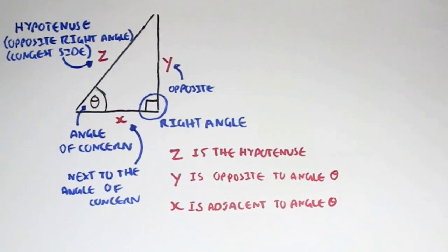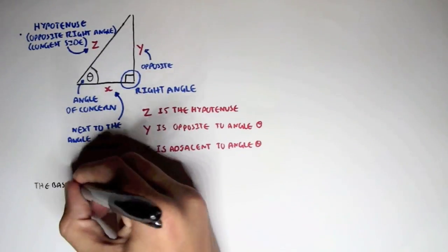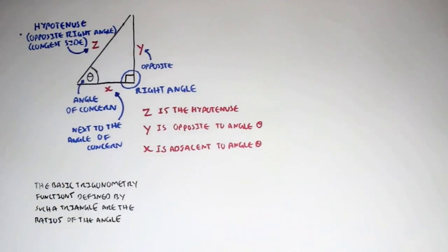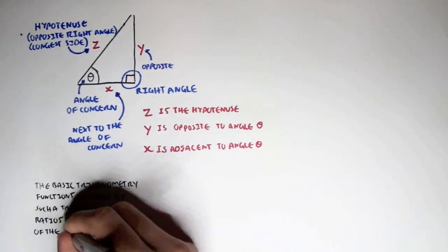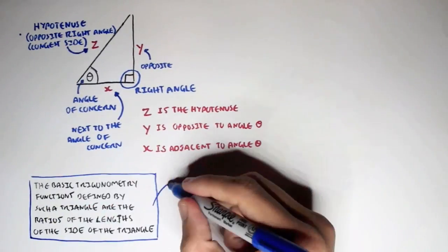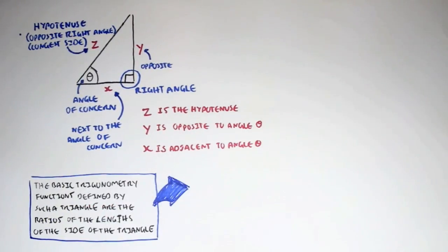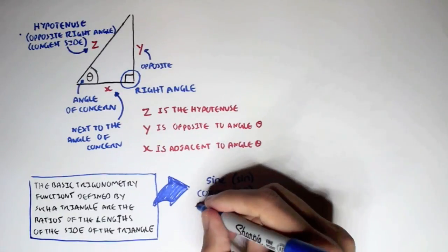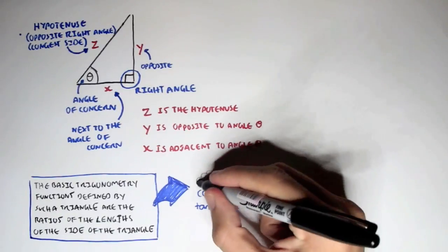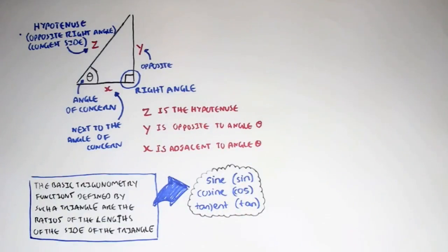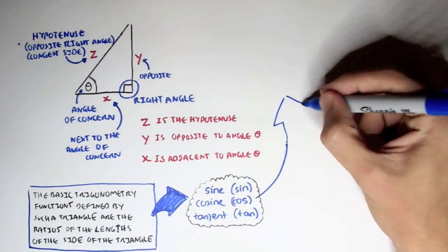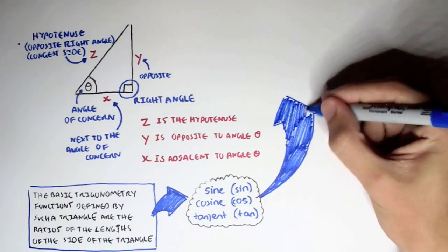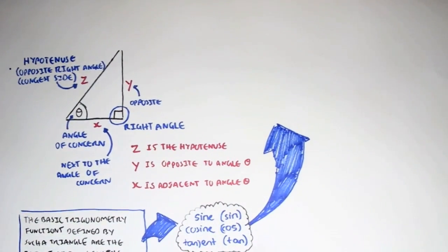The basic trigonometry functions defined by such a triangle are the ratios of the lengths of the sides. The ratios of the lengths of the sides of the triangle can be given by three trigonometry functions. These are sine, cosine, and tangent. Let's look at these three trigonometry functions in terms of a particular angle — the angle of concern.